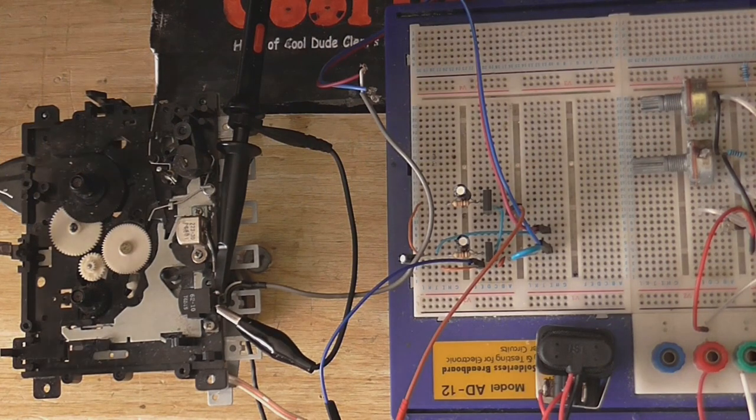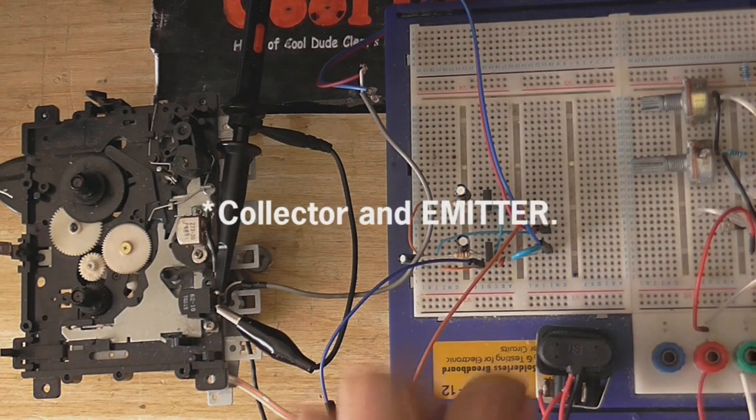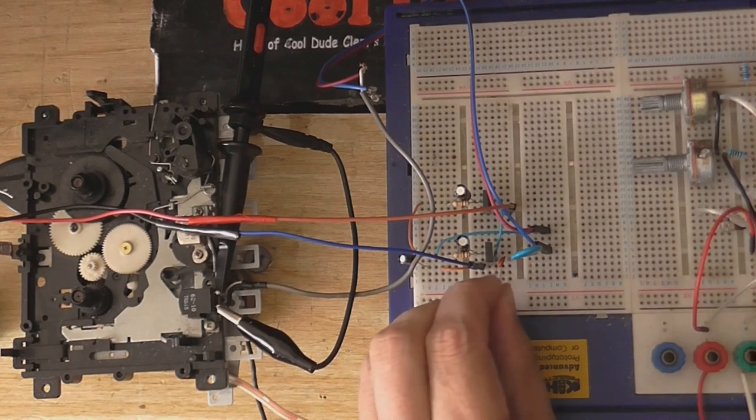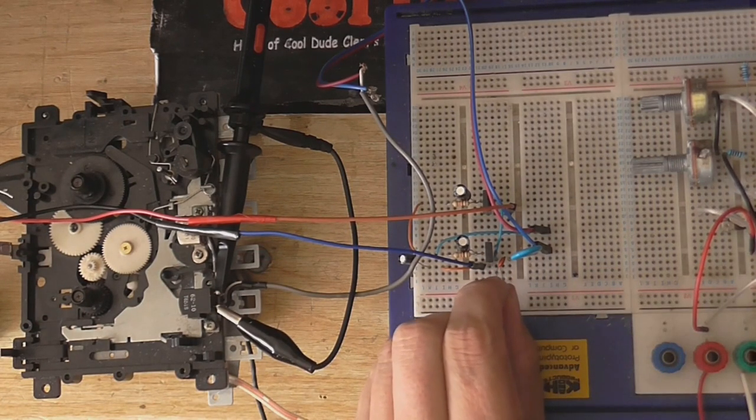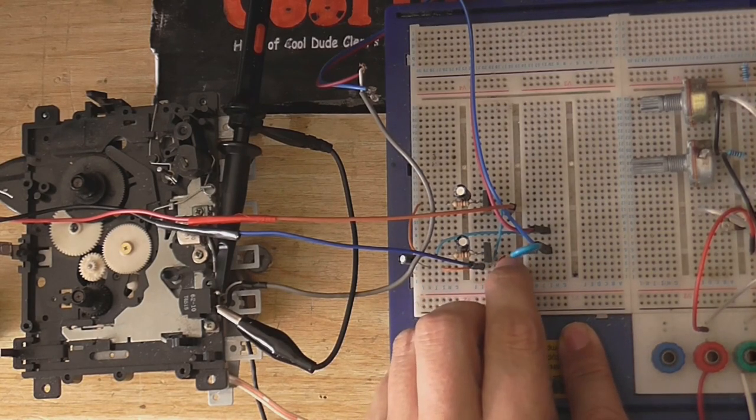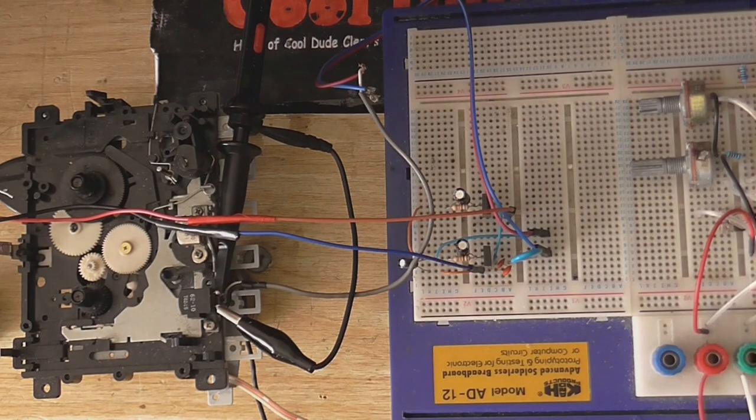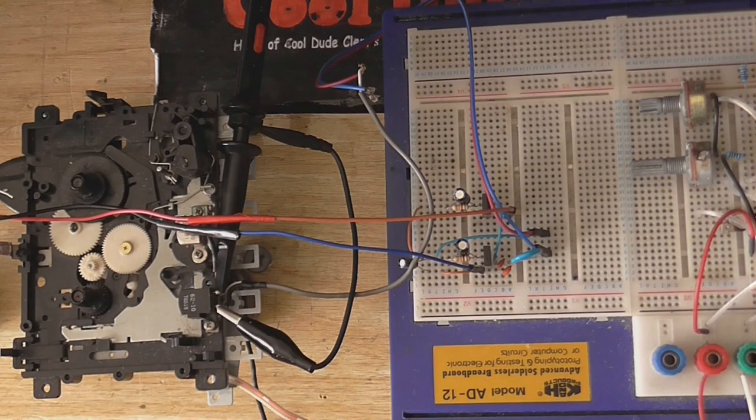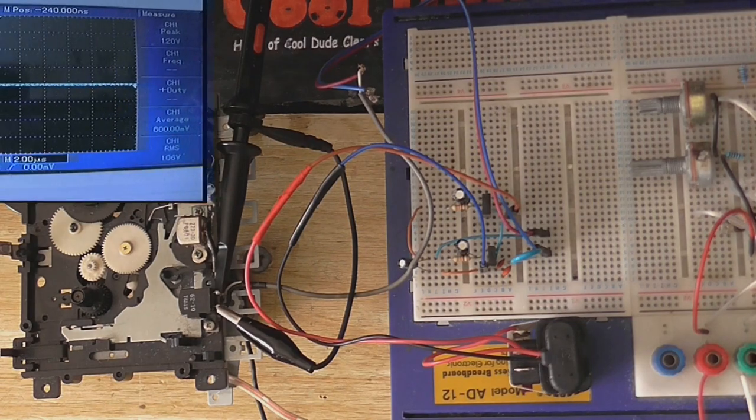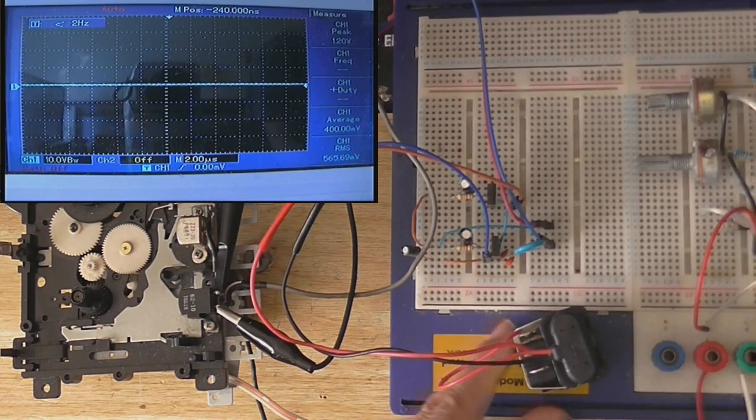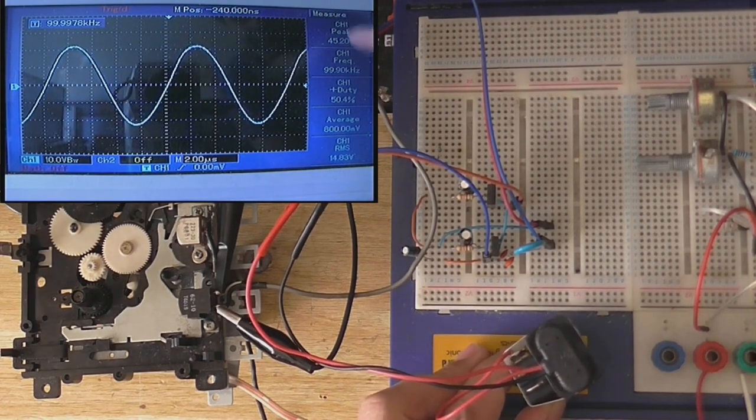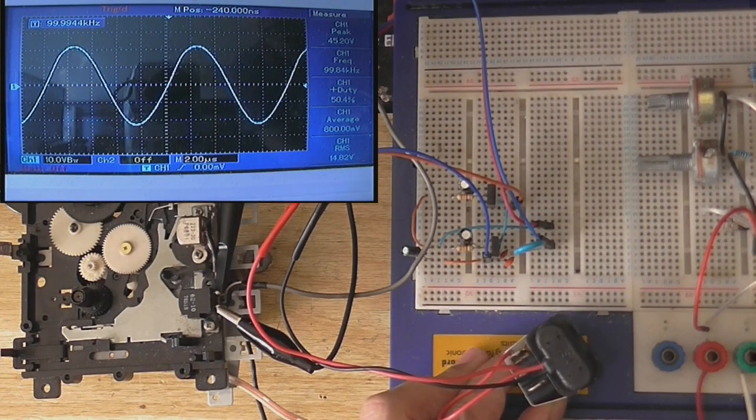Now I just want to put an extra 100 nanofarads in between the collector and base of the NPN transistors. I'm running out of holes on my breadboard here. Had to put those two capacitors in the same hole, but they've got nice thin legs. So let's see what we get now. Oh yeah, look at that! 45 volts! 100 kHz! That's perfect!